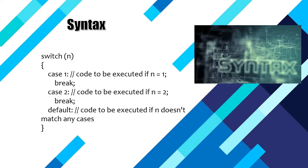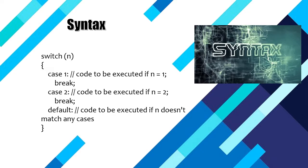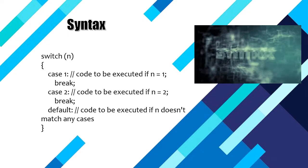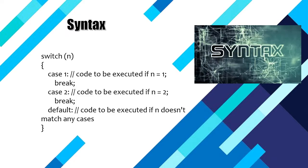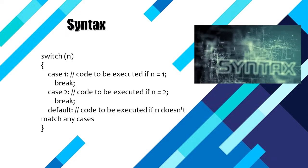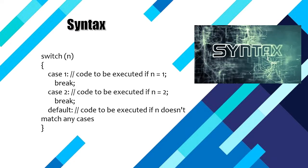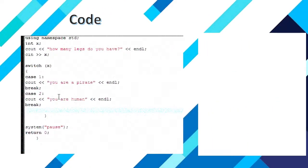If default comes, then code to be executed if n doesn't match any case. For example, if we have x equal to 1, but we are checking for x equal to 3, the code doesn't match. In that sense, let's see the code. Here we have defined int x and we have a cout statement asking how many legs do you have, then cin is x.